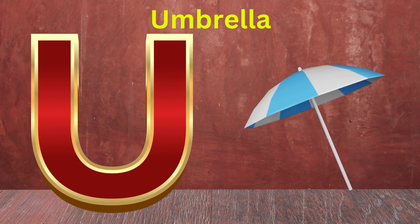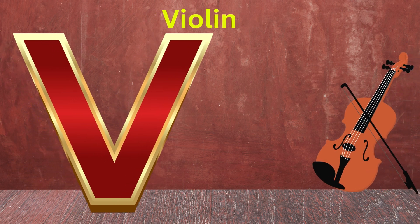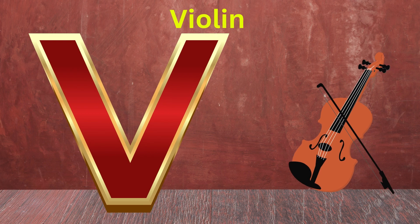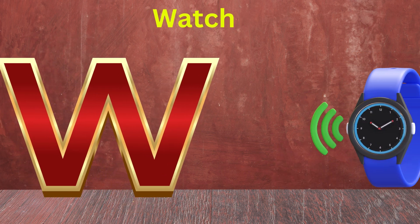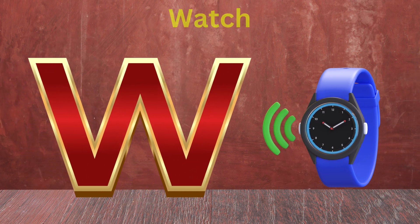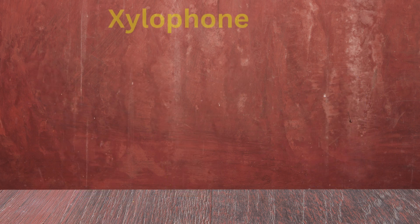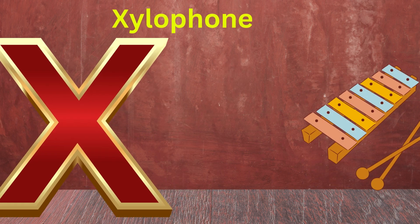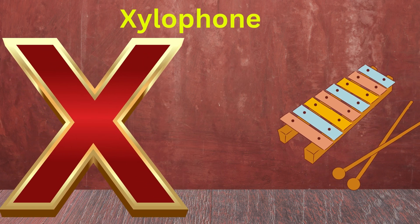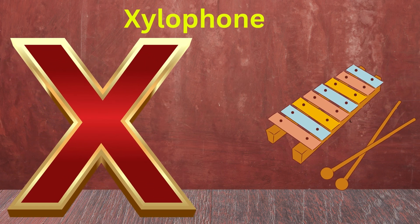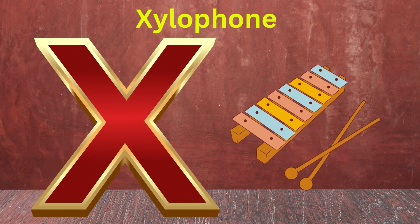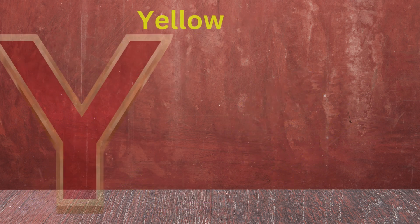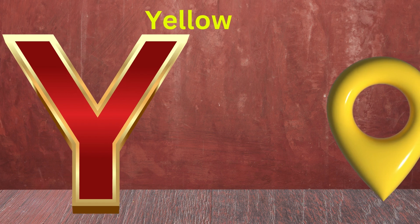U is for Unicorn, U-U-Unicorn. V is for Vulture, V-V-Vulture. W is for Watch, W-W-Watch. X is for Xylophone, X-X-Xylophone.